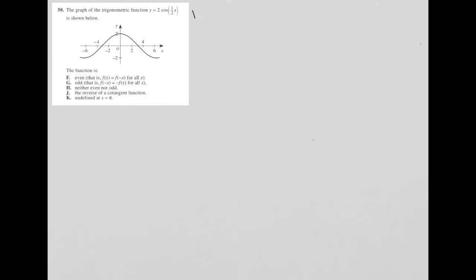So this question is a diagram question. Let's read the question and see what we can do with it. The graph of the trigonometric function y equals 2 cos 1 half x is shown below. And that's all we're told. So they give us this function, they tell us what the graph is, and then the question just says the function is, and then we have all these answer choices, which means we have to test all the answer choices.